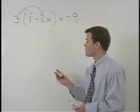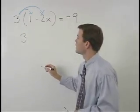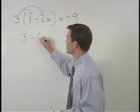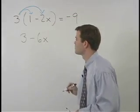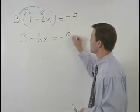When we do that, we get 3 times 1, which is 3, and 3 times negative 2x, which is negative 6x. So we have 3 minus 6x equals negative 9.